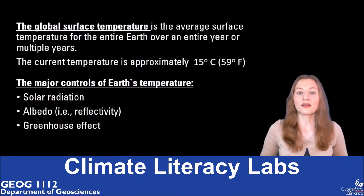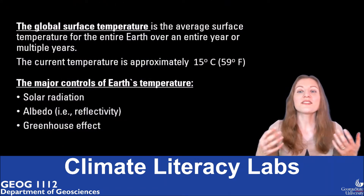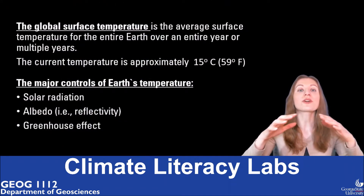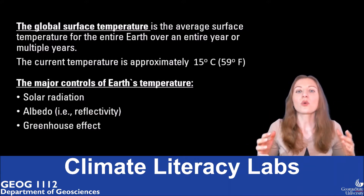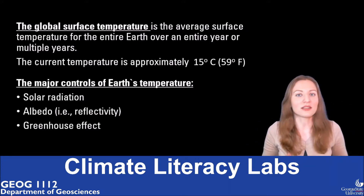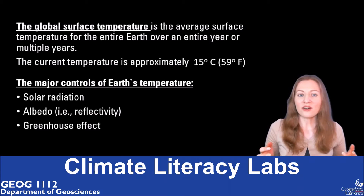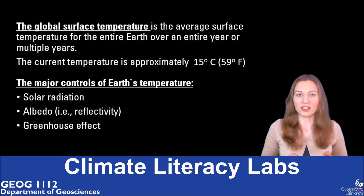The global surface temperature is the average surface temperature for the entire Earth over an entire year or multiple years. The current Earth's global temperature is approximately 15 degrees Celsius or 59 degrees Fahrenheit.